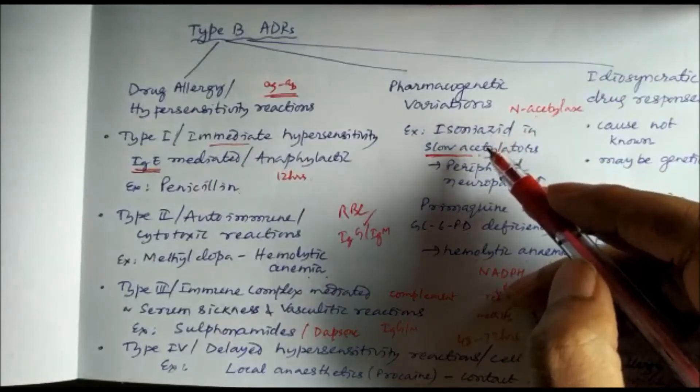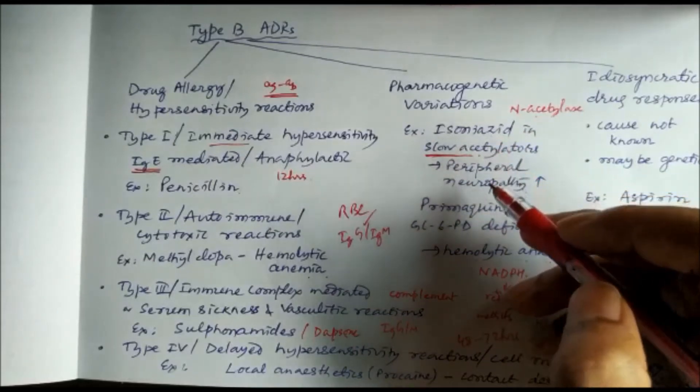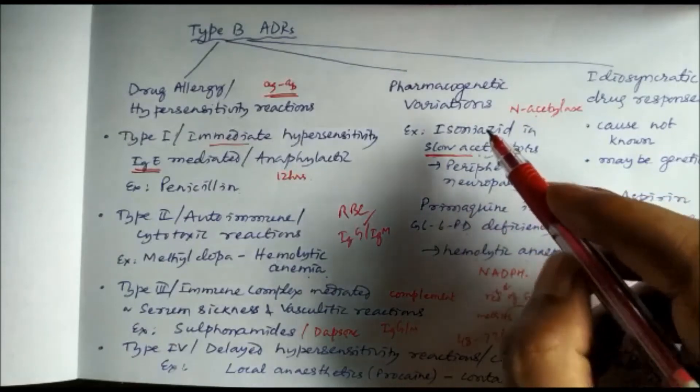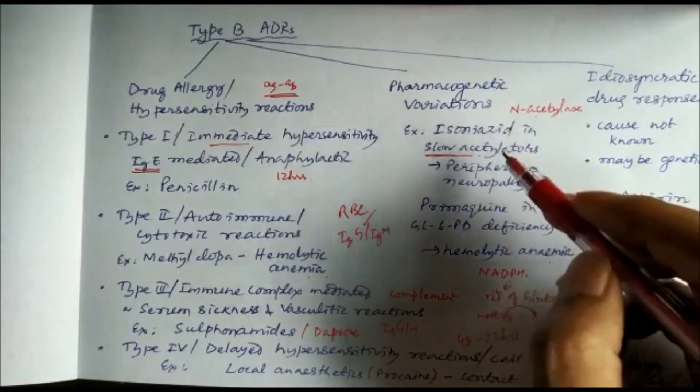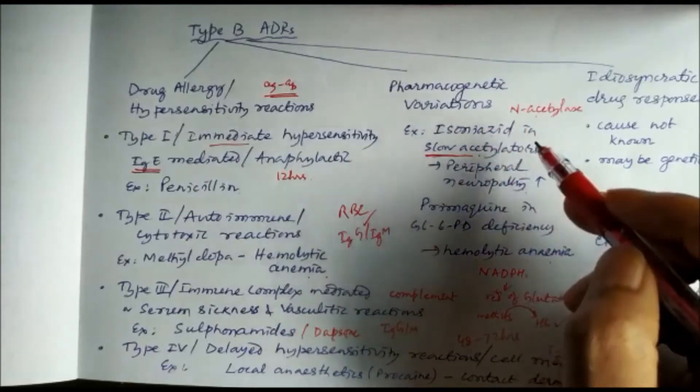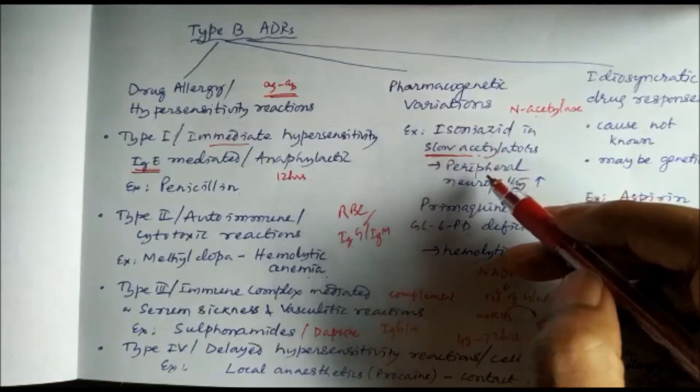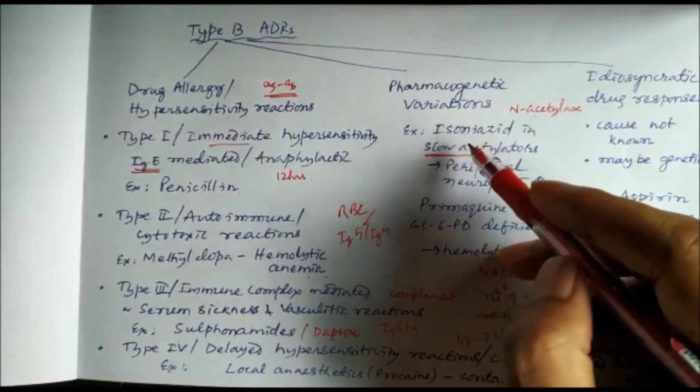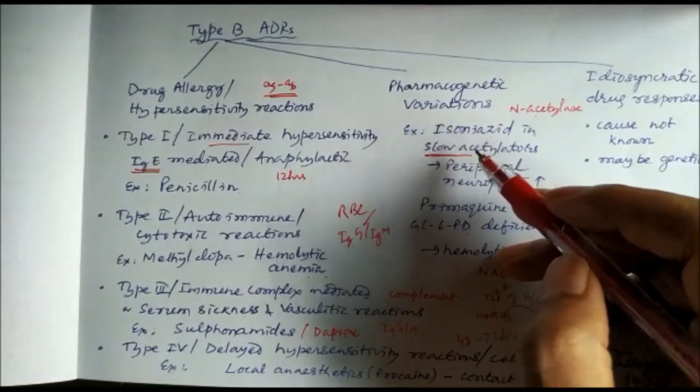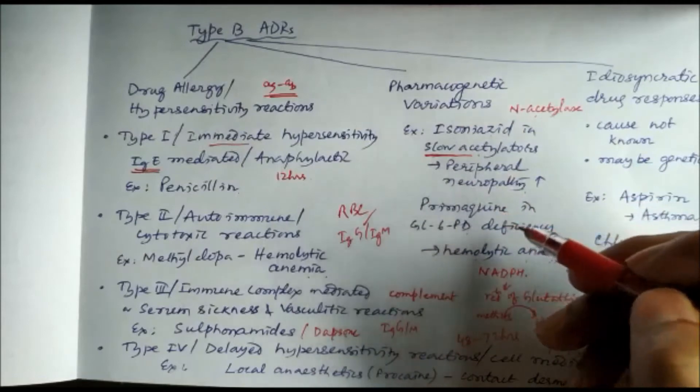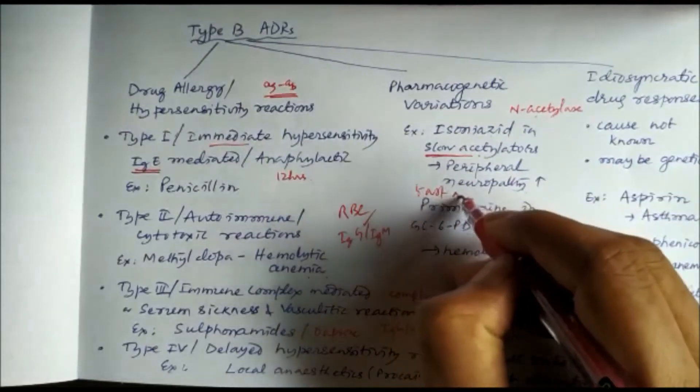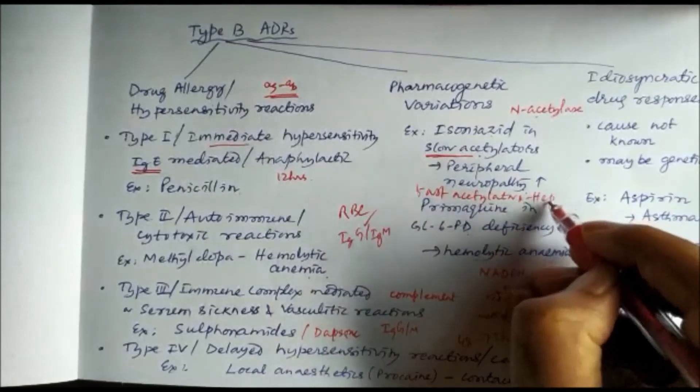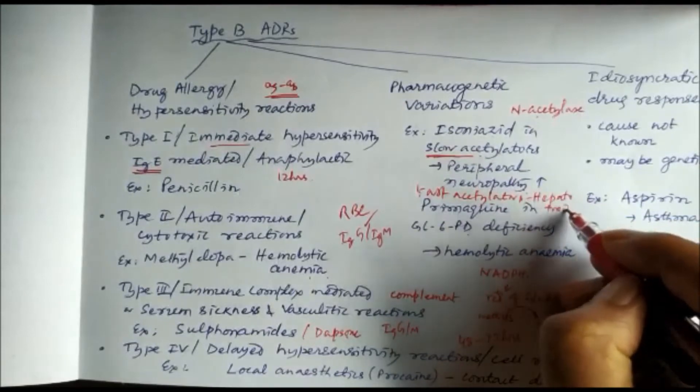Again with isoniazid, another metabolite is acetyl hydrazine which causes hepatotoxicity. In case of fast acetylators, there will be more acetyl hydrazine. In slow acetylators there will be accumulation of isoniazid, but in fast acetylators there will be more production of acetyl hydrazine which causes hepatotoxicity. So there is increased risk of hepatotoxicity in case of fast acetylators. This is a classical example of pharmacogenetic variation.